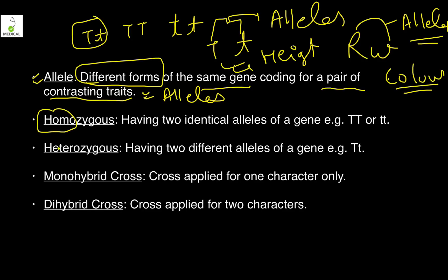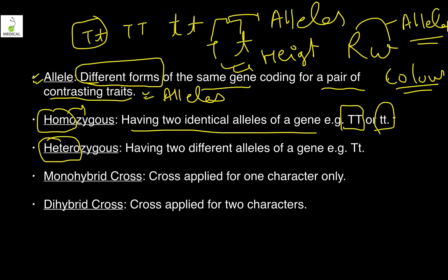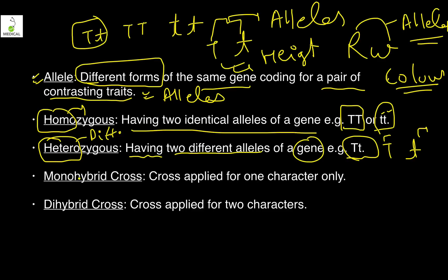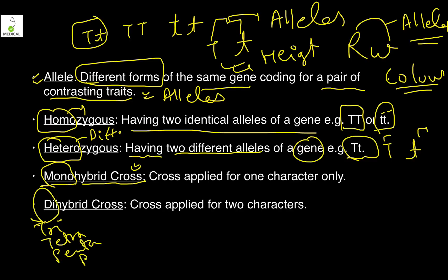Homo means same, hetero means different. If there are same alleles in a pair — either TT or tt — it is called homozygous. If there are two different alleles — capital T and small t — it is called heterozygous. Capital T codes for tallness and small t codes for shortness.